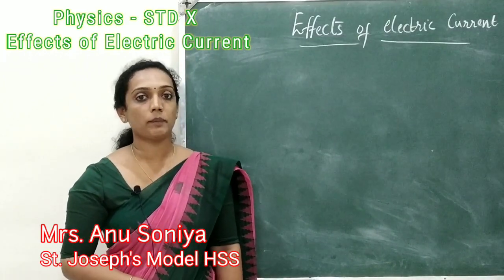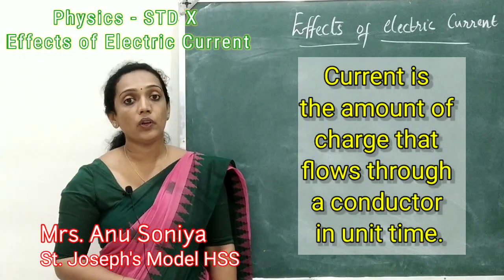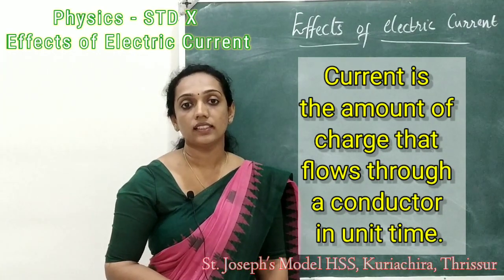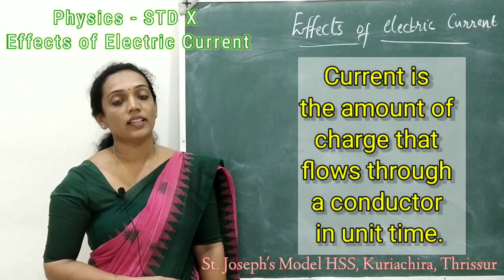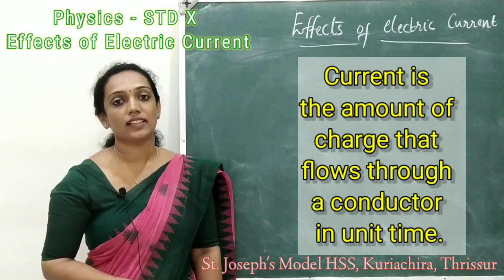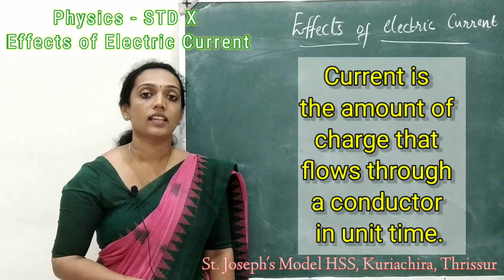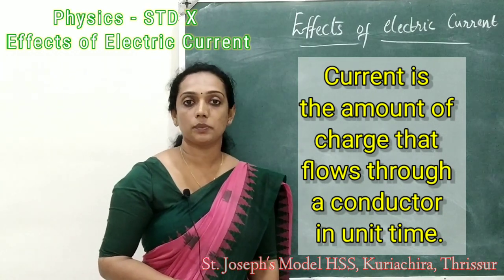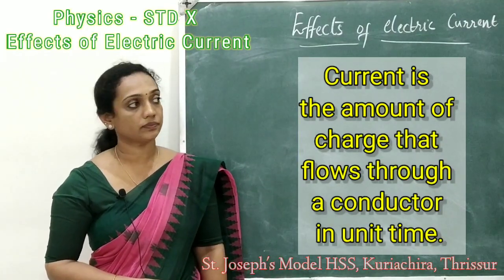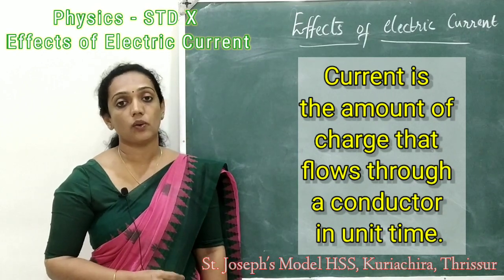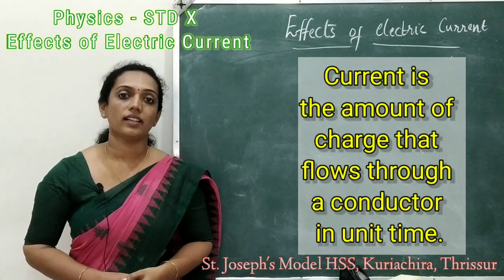Let's memorize it again. What is electric current? It is the amount of charge that flows through a conductor in unit time. In an atom there are protons, electrons, and neutrons. Protons are positively charged particles, electrons are negatively charged particles, and neutrons are neutral — they have no charge. The flow of these electrons, or negatively charged particles, makes the current.